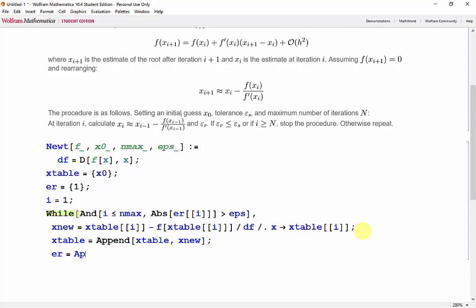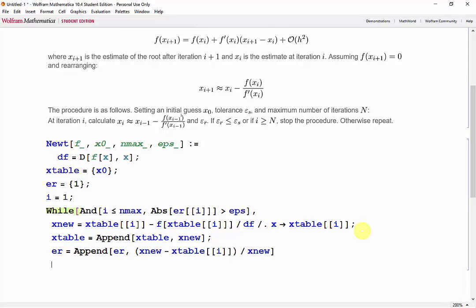And now we need to add to our list of errors by calculating the relative error of the new iteration. So error is going to be appended with, and we're just going to use relative error, x_new minus x table of i divided by x_new. Then we need to increase i by 1.